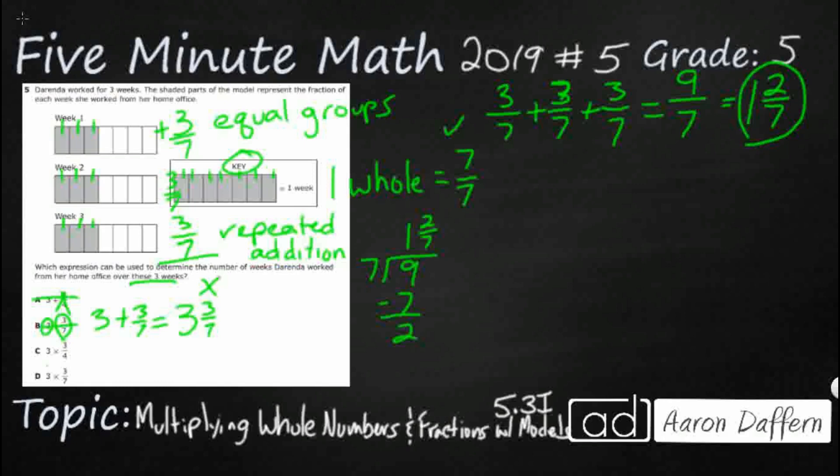Here we go. We could do three times three fourths. Now when we multiply fractions, we multiply straight across. You do not need to have the numerator or denominator be the same. But the problem is, we've got no denominator underneath one. So we could make it three over one and we can multiply. We would get nine fourths. Oh, it's so close. But look, the denominator is different. We're looking for a denominator of seven. Pretty sure that's not it.